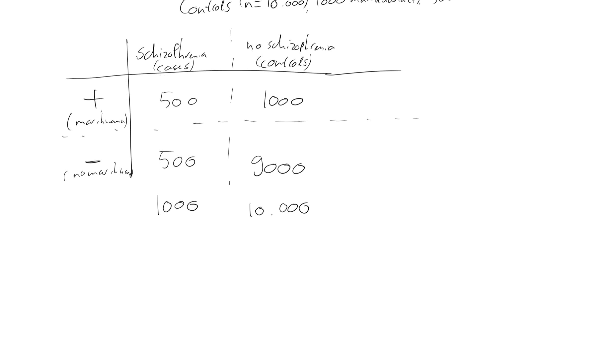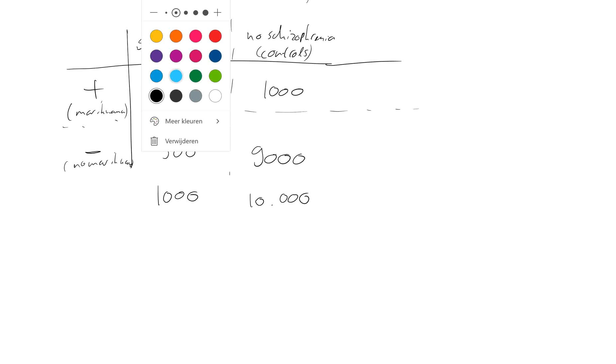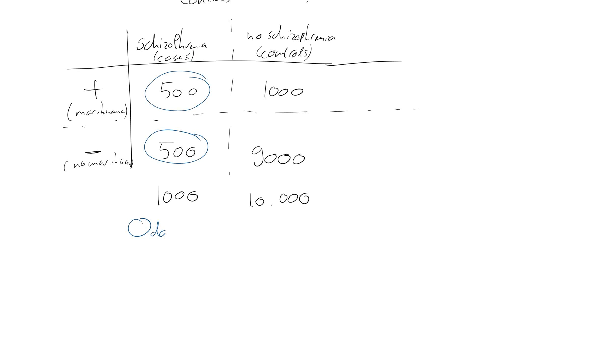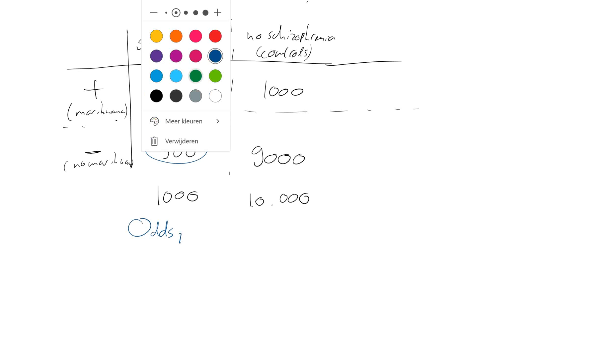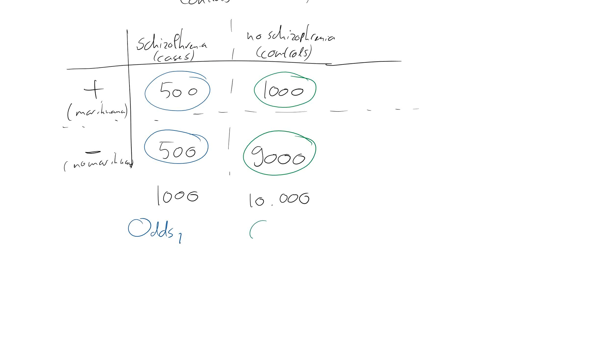Now, how do we calculate the odds ratio? We calculate the odds ratio by calculating odds 1 and dividing that by odds 2. So how does this work? Odds 1 is the odds that a schizophrenia patient used marijuana. So odds 1 is 500 divided by 500, which is 1.